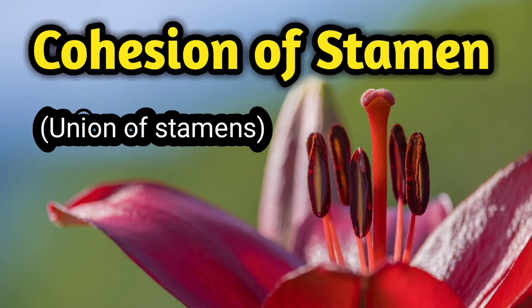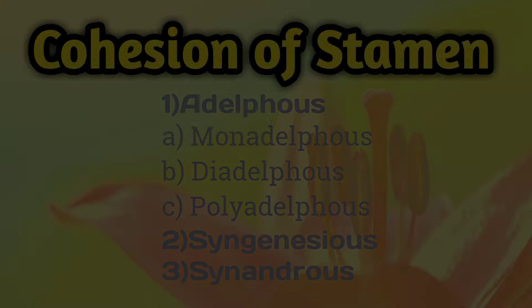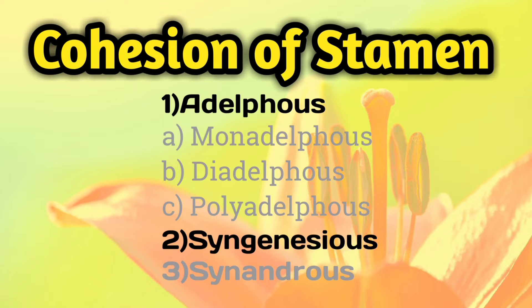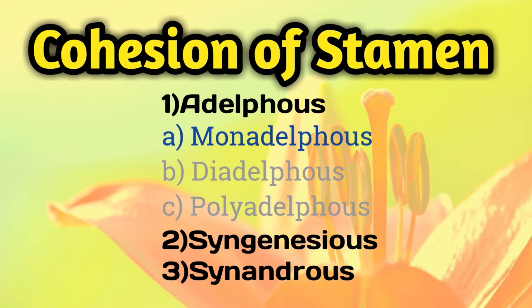Cohesion of stamens means union of stamens. Cohesion of stamens are of three types: adelphus, syngonesius, and synandrous. Adelphus are of three types: monadelphous, diadelphous, and polyadelphous.